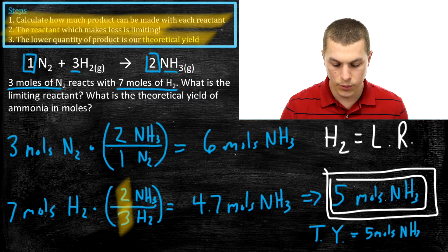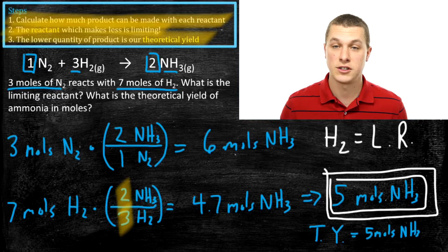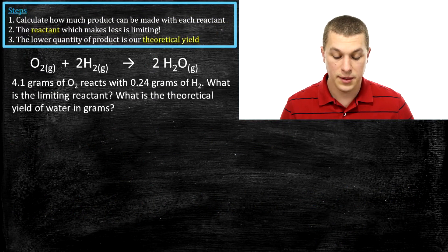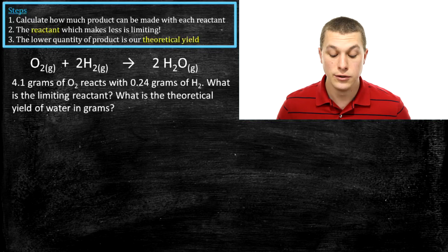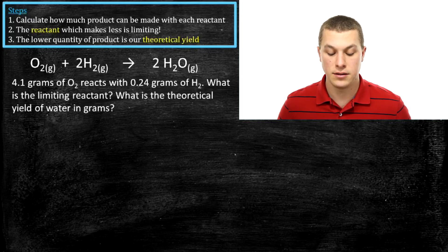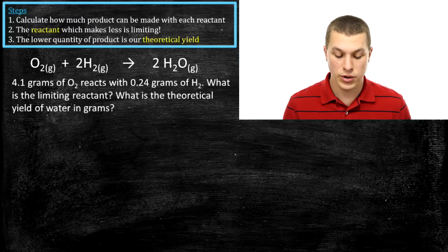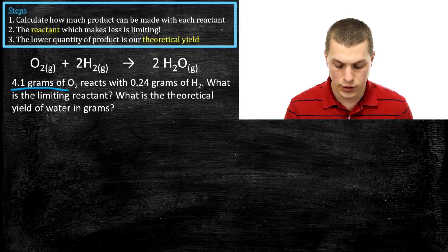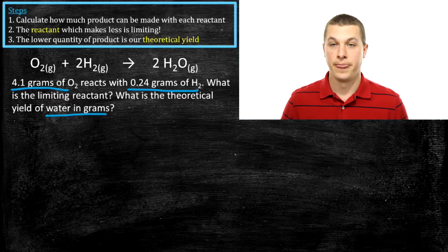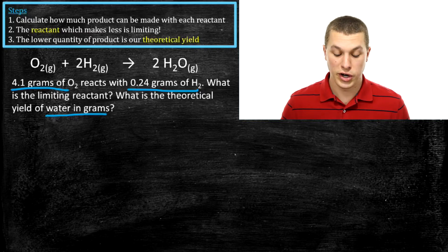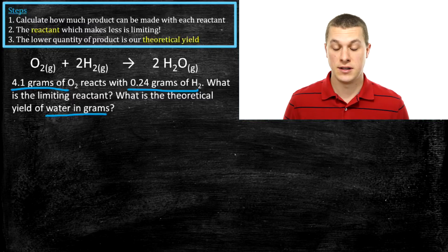That's how we do these problems when worded in textbook-like ways. We're going to do one more problem where the conversion is a touch more complicated. We're given our chemical reaction, and we're also told that 4.1 grams of O2 reacts with 0.24 grams of H2. We want to know the limiting reactant and the theoretical yield of water in grams. The main difference from our last problem is that quantities are now given in grams, so this is a mass-to-mass conversion. We cover these extra steps in the introduction to stoichiometry video.